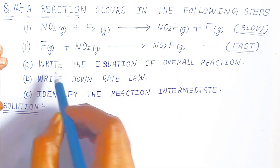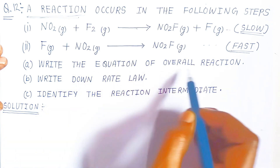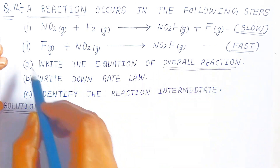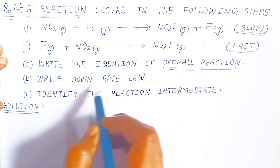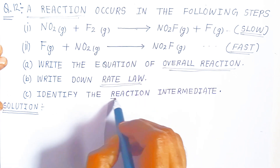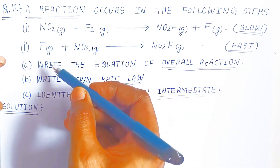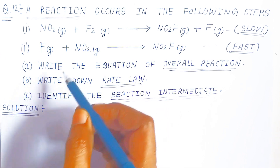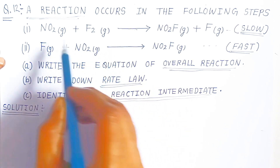We have to answer three questions: first, write the equation for the overall reaction (1 mark); second, write down the rate law (1 mark); and third, identify the reaction intermediate (1 mark). So this is a three-marks question in the examination.